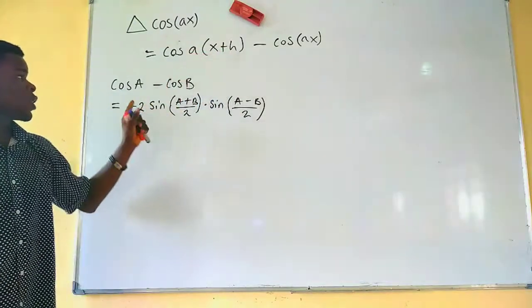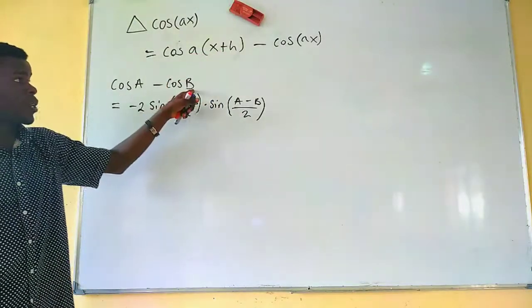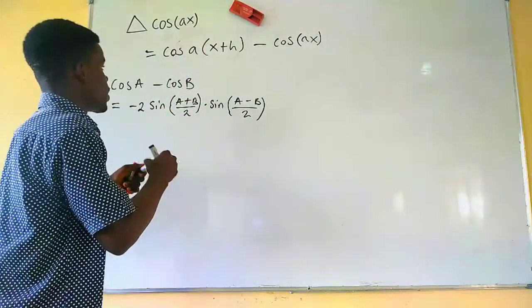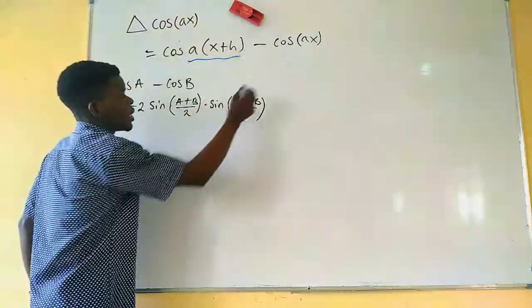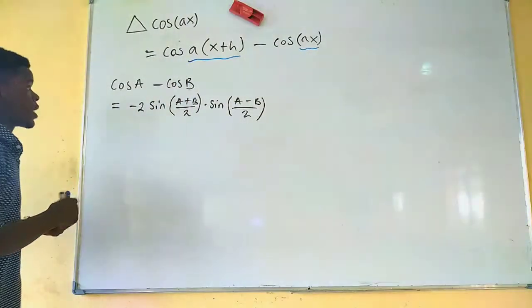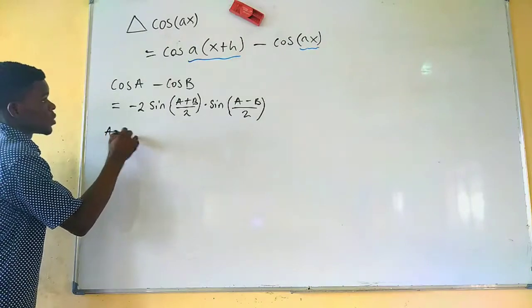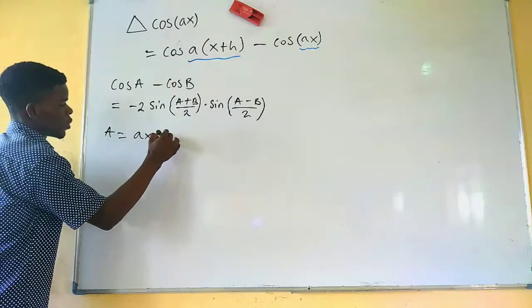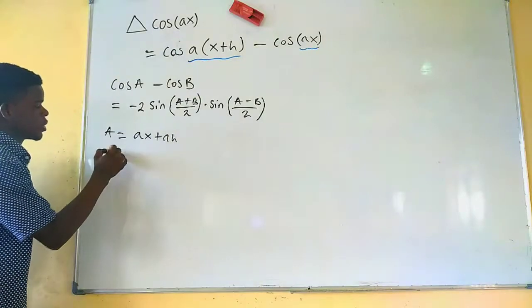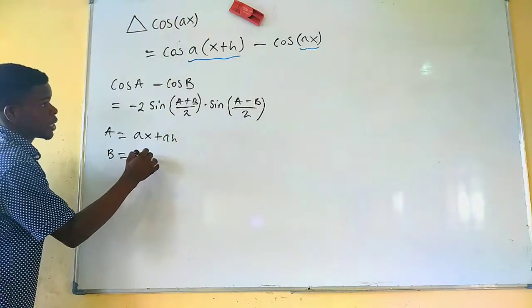So, if you notice, we're having A and B. From here, we can observe that the whole of this is going to be the A, it's going to take the place of the A, and this right here is going to take the place of the B. So, let me just write that out. We have that A is equal to x plus h, and B is going to become x.